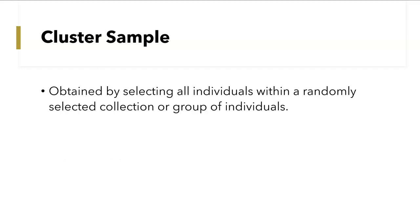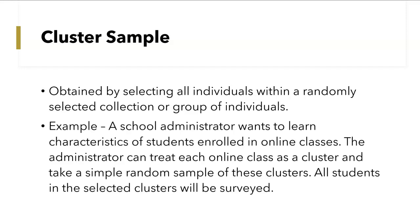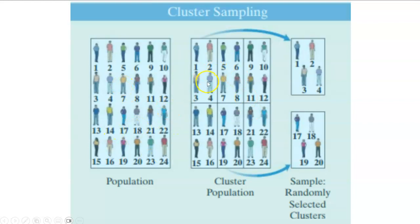The next type of sample is a cluster sample. This is obtained by selecting all individuals within randomly selected groups. For example, a school administrator wants to learn characteristics of students enrolled in online classes. The administrator can treat each online class as a cluster and take a simple random sample of clusters, then interview all the students in each selected class. This is similar to stratified sampling, but the difference is that in stratified, you take a random sample from each group; in cluster, you survey every individual in the selected group.